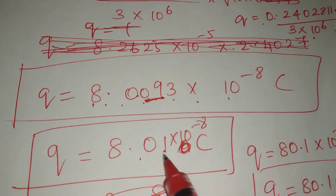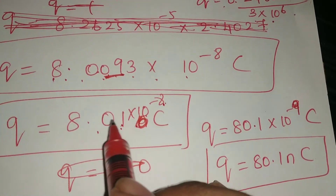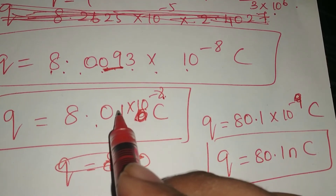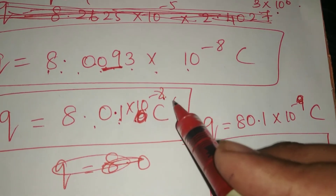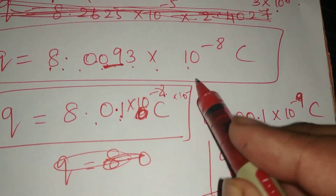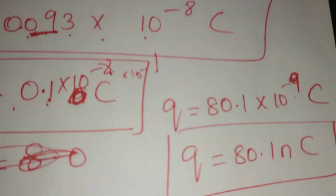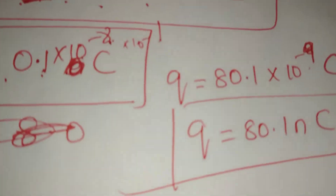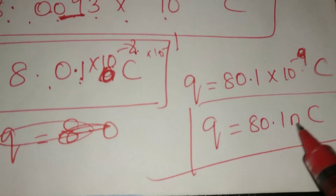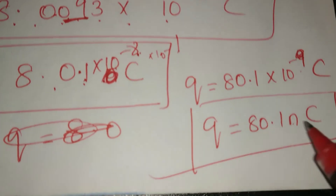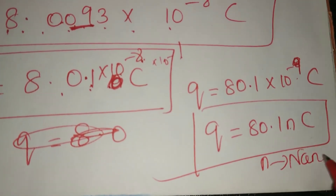The result is q = 8.01 × 10⁻⁸ coulombs. Since 0.1 adds one to the power, this becomes 10⁻⁹, which is nano. Therefore q equals 80.1 nanocoulombs.